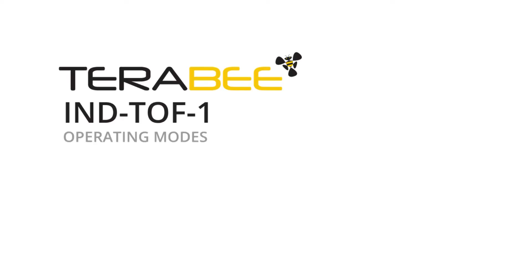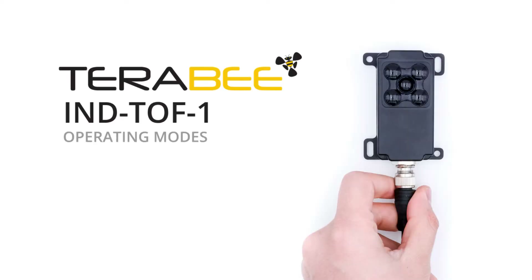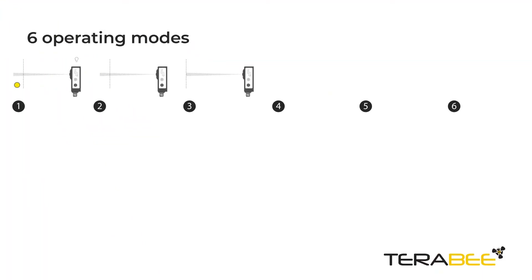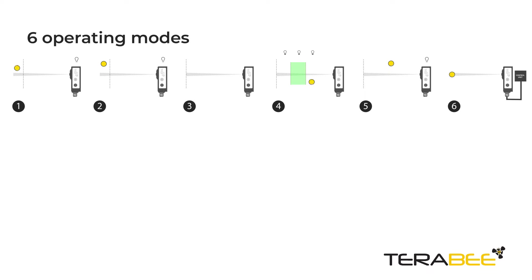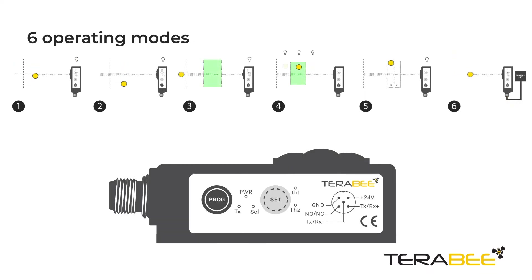TeraBee presents operating modes for its IND TOF-1 distance sensor. Choose between 6 operating modes for proximity notification and distance ranging data. The sensor features onboard teach-in buttons for quick and intuitive distance threshold programming.